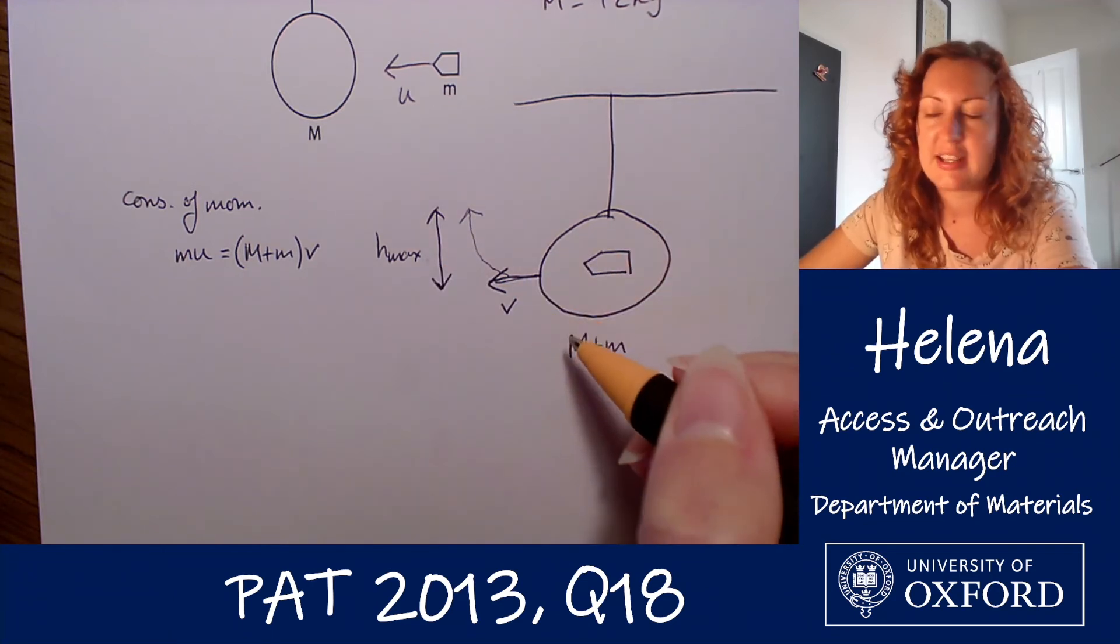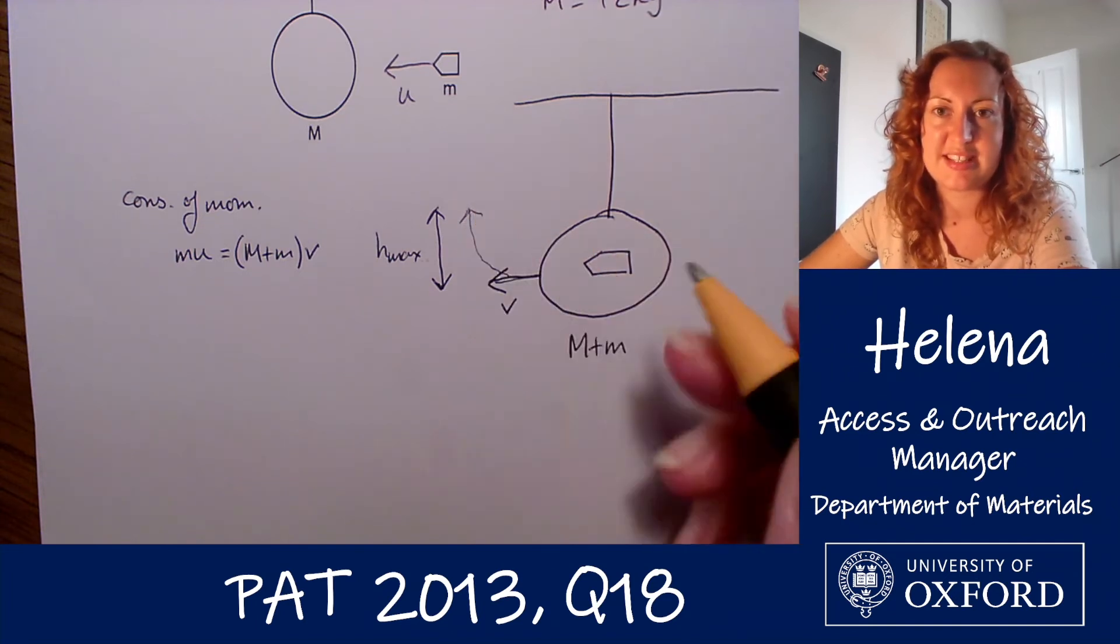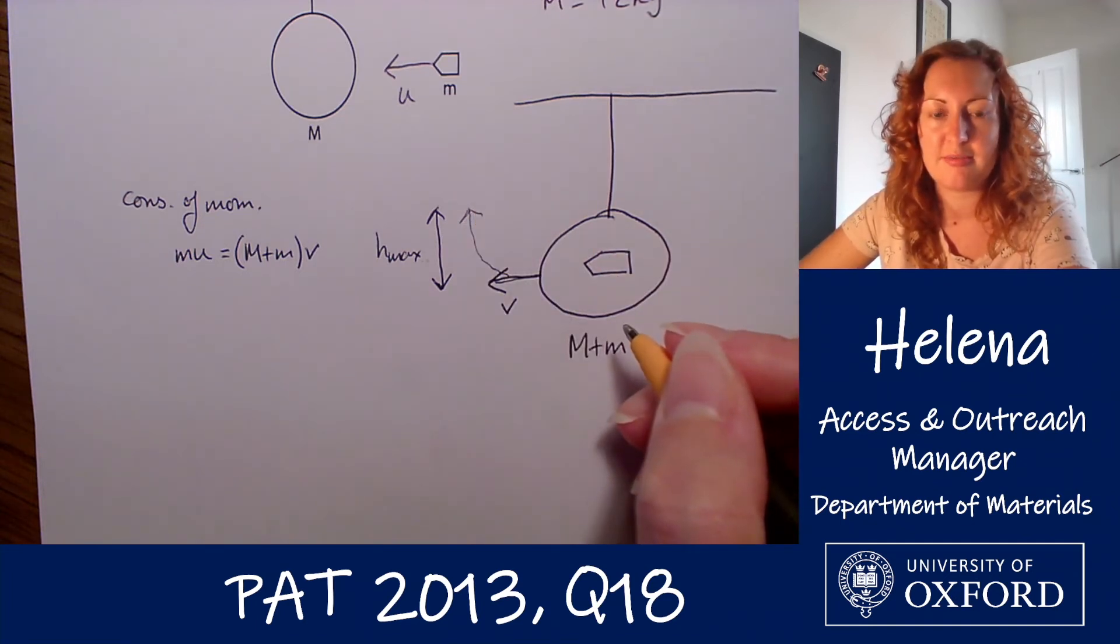And at this point h_max, where I've already said its velocity is zero, all of that initial kinetic energy is going to have been transferred into gravitational potential energy to increase its height to the maximum value.